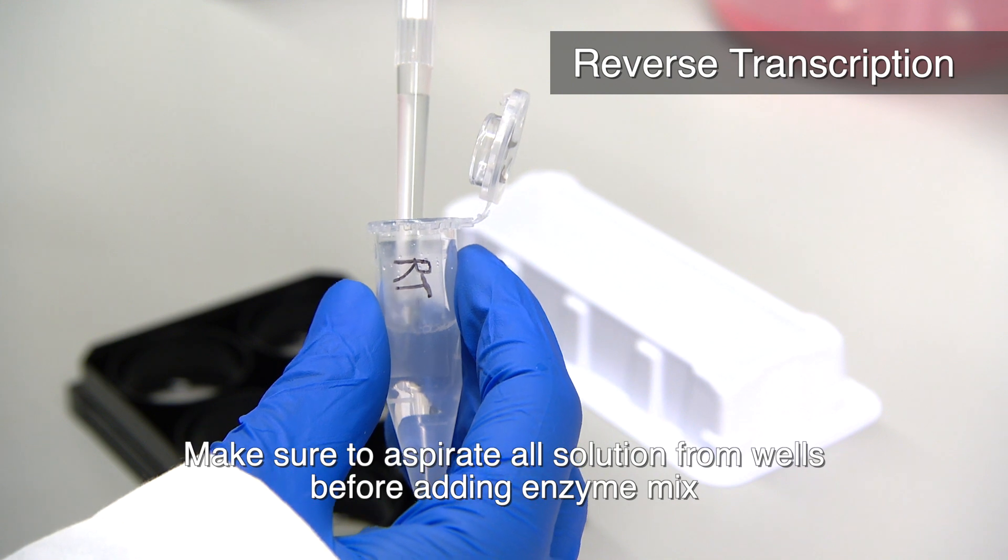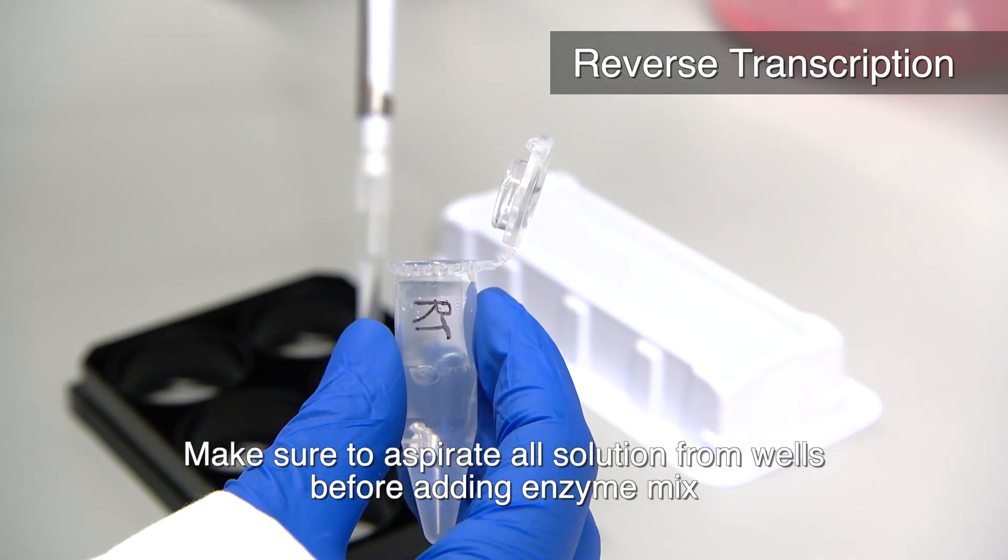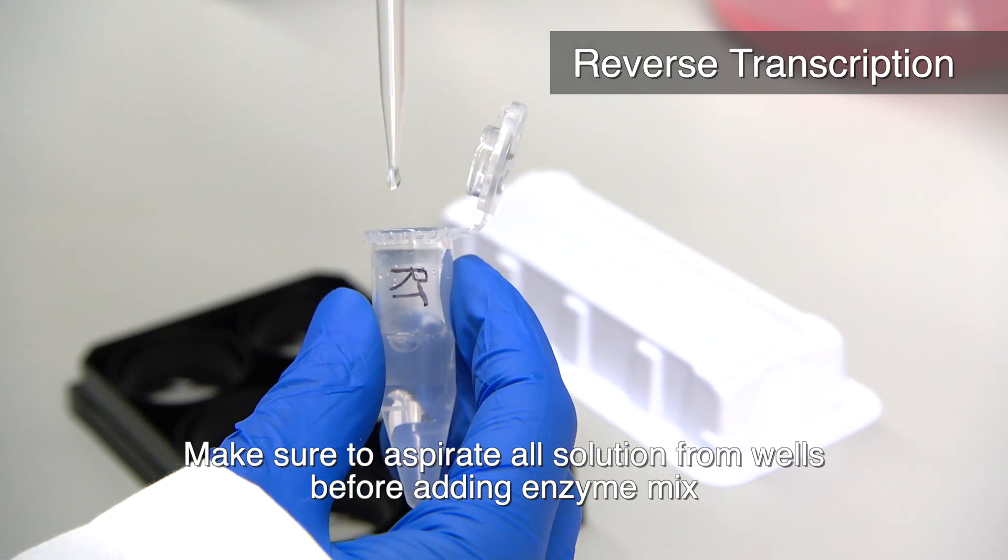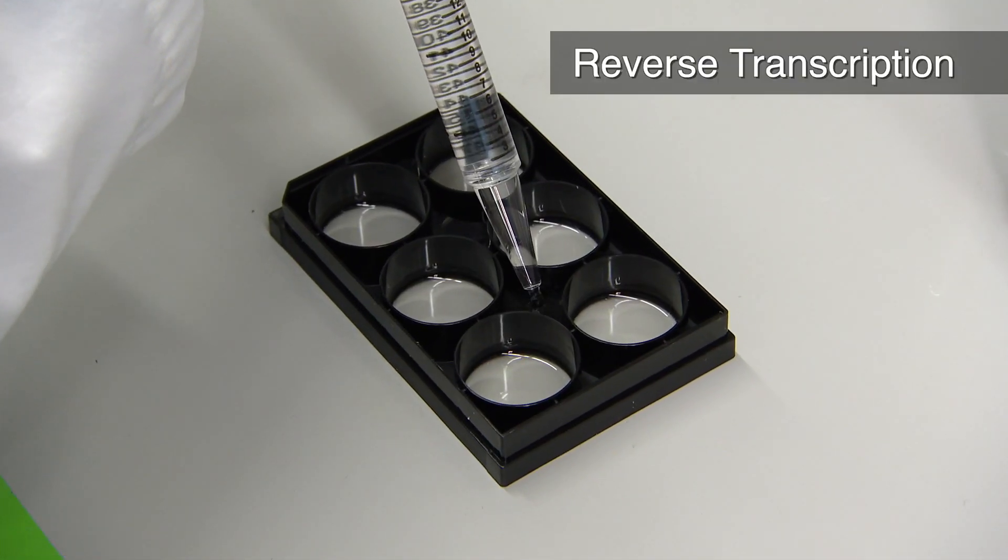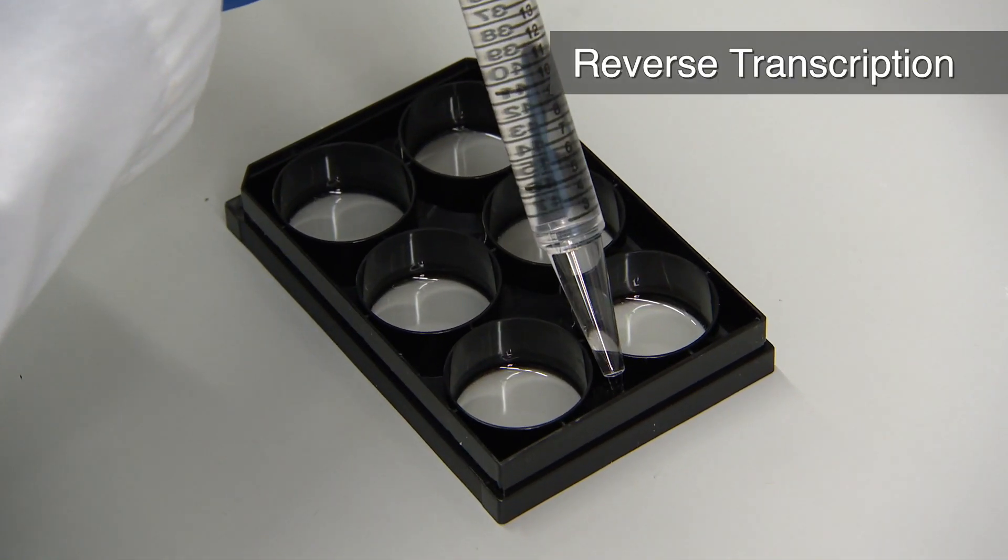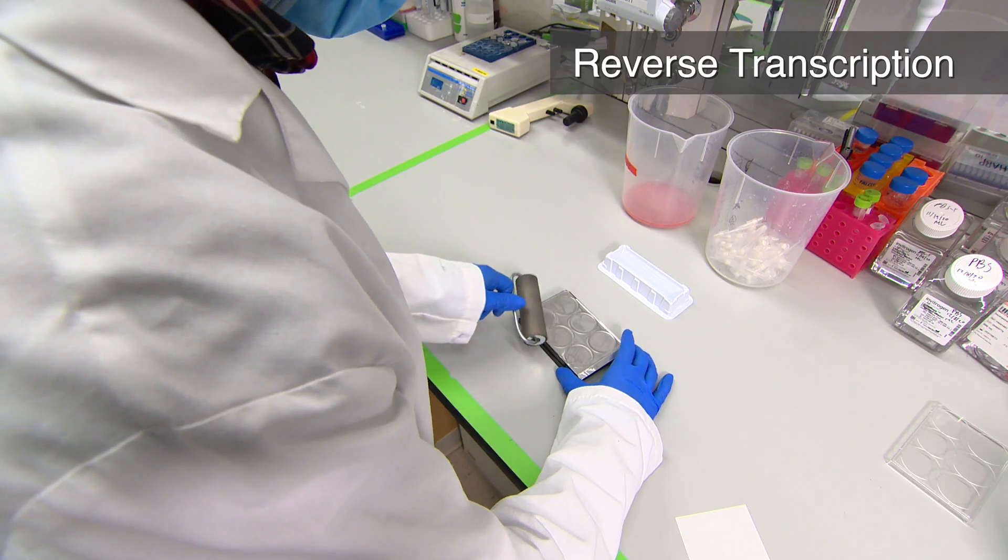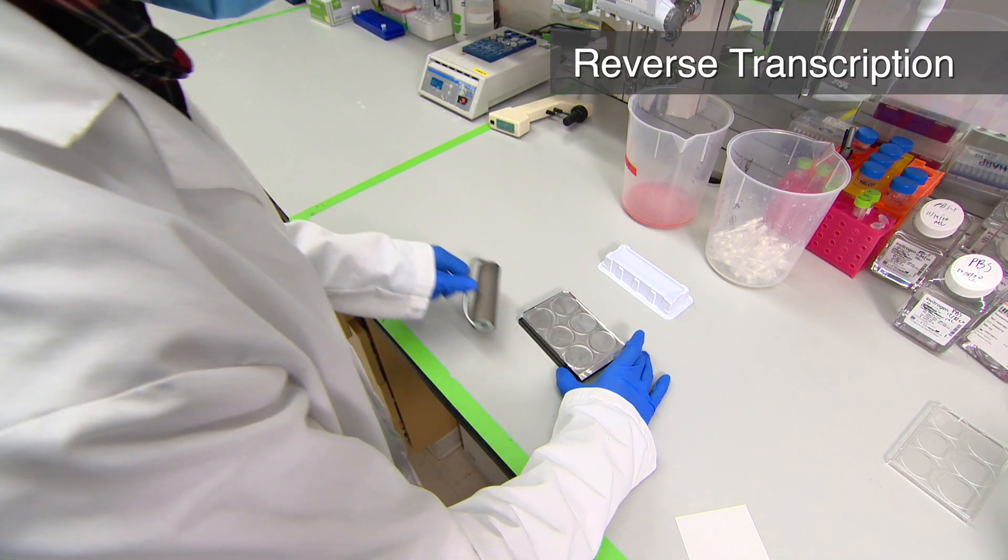Now prepare the reverse transcription reaction mix and add 750 microliters to each well. Fill the space between wells with nuclease-free water to prevent drying. Seal with an aluminum lid and shake overnight.